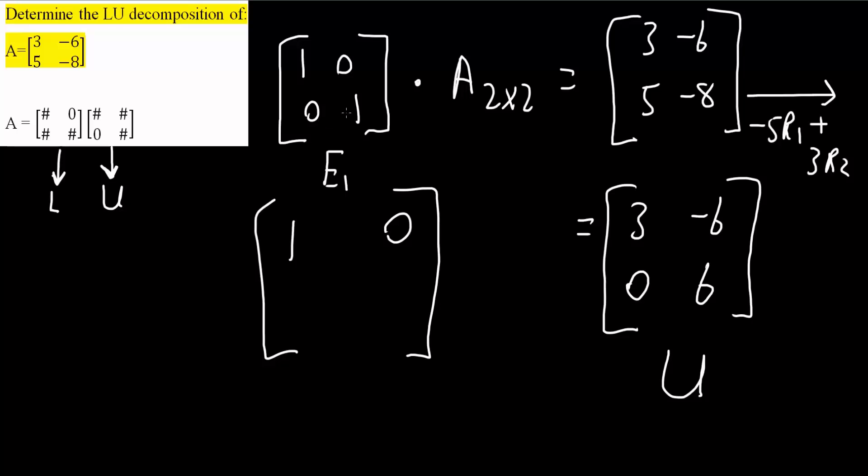However, the bottom row will now get changed. -5 times R₁: -5 times 1 would give us -5, plus 3R₂: 3 times 0 is 0. So, we remain -5. Next, this one right here. -5 times 0 is 0, plus 3R₂: 3 times 1 would give us 3. And so, now, this is this matrix.